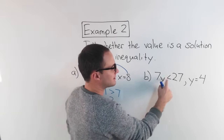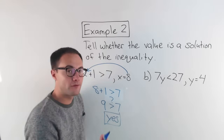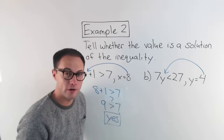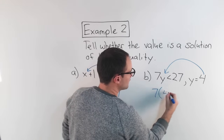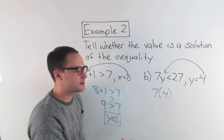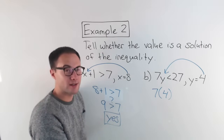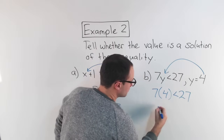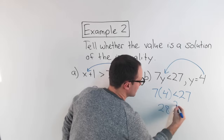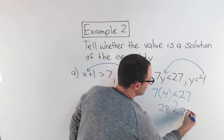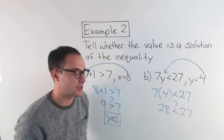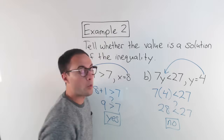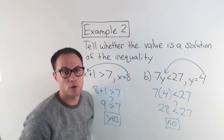Next: 7Y is less than 27. We're testing the value 4 for Y. Substituting, I get 7 times 4 — use your parentheses, right, that means multiplication — is less than 27. So 7 times 4 is 28. Is 28 less than 27? No, 28 is not less than 27; 28 is greater than 27. So Y equals 4 is not a solution to that inequality.